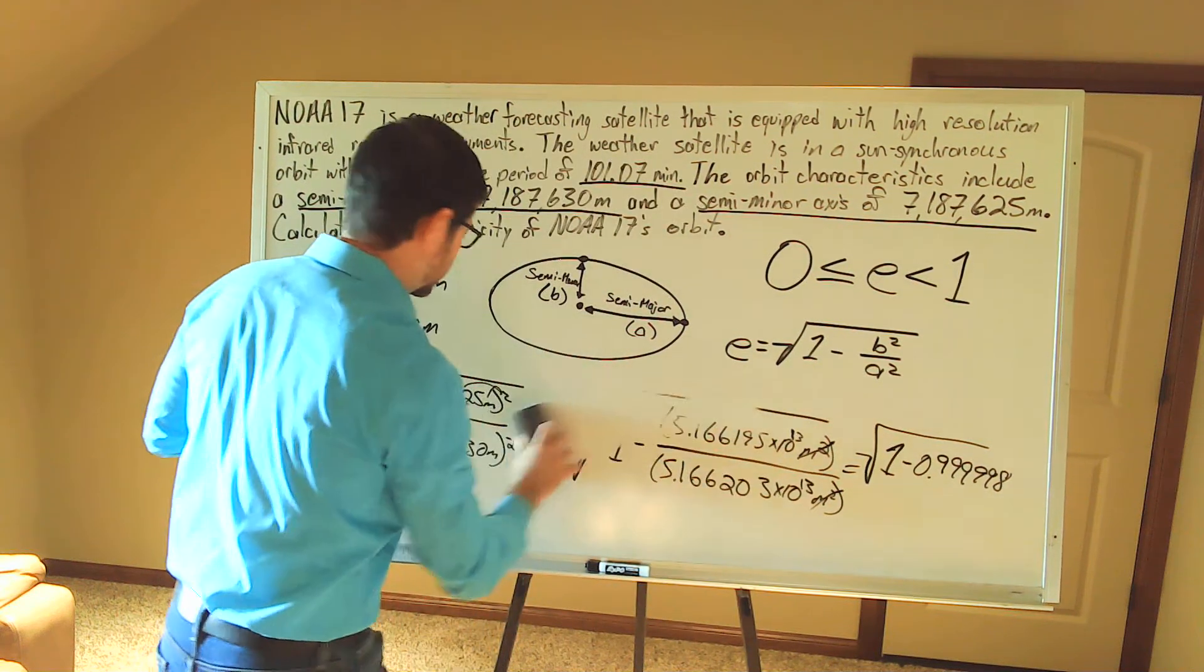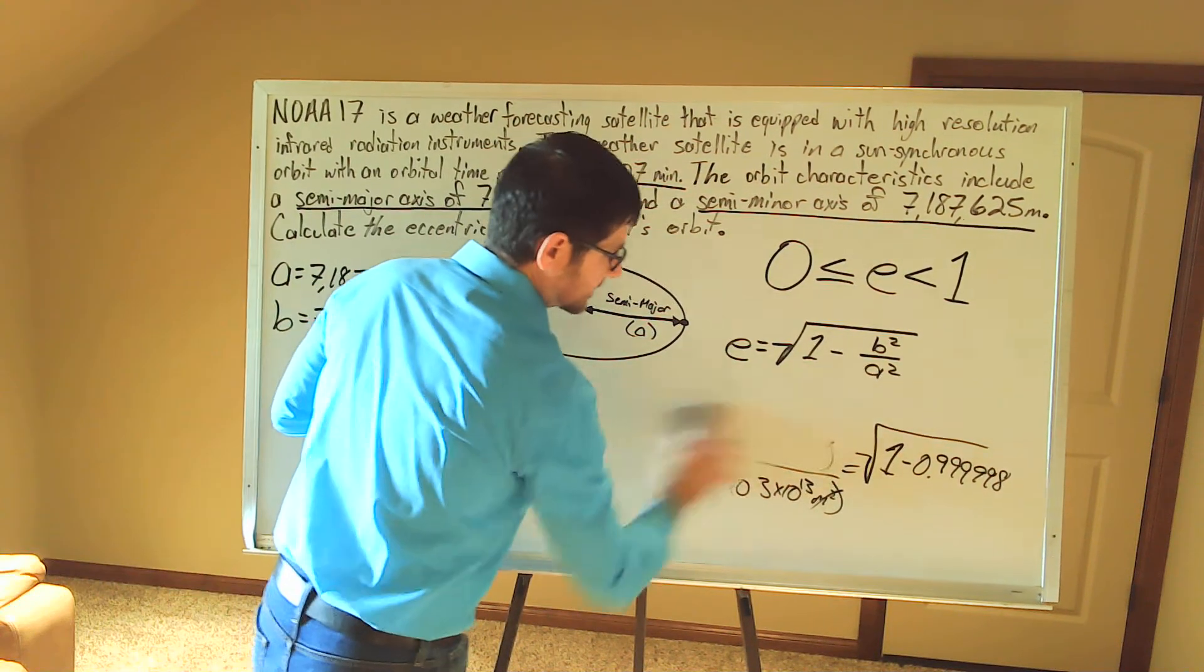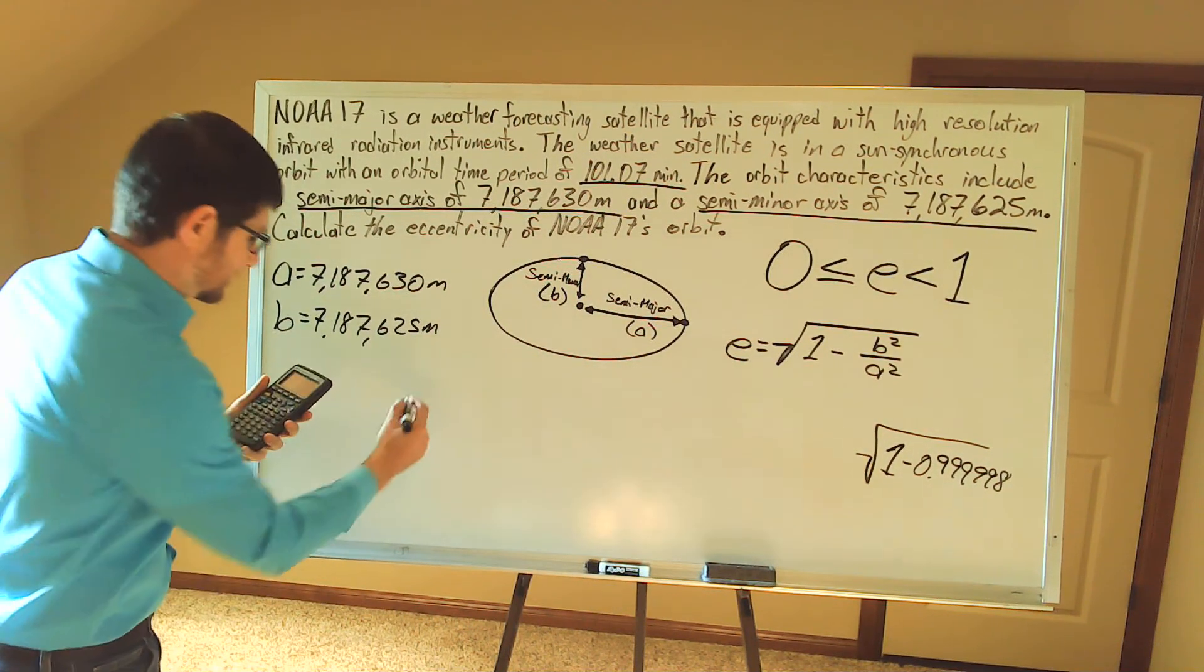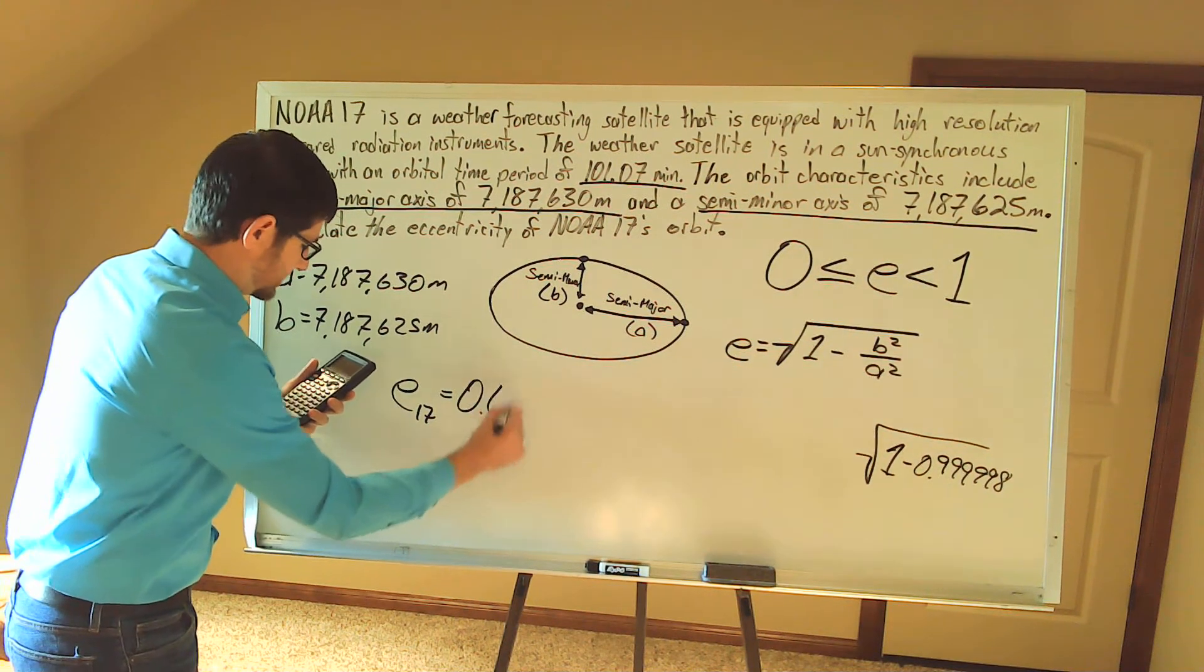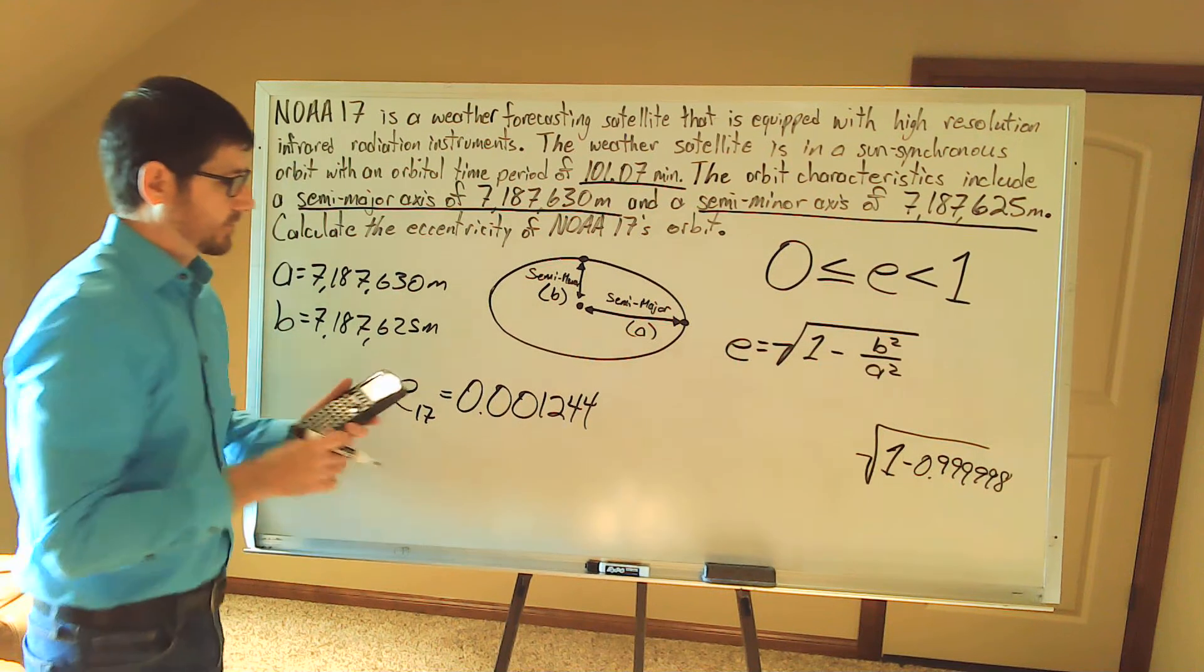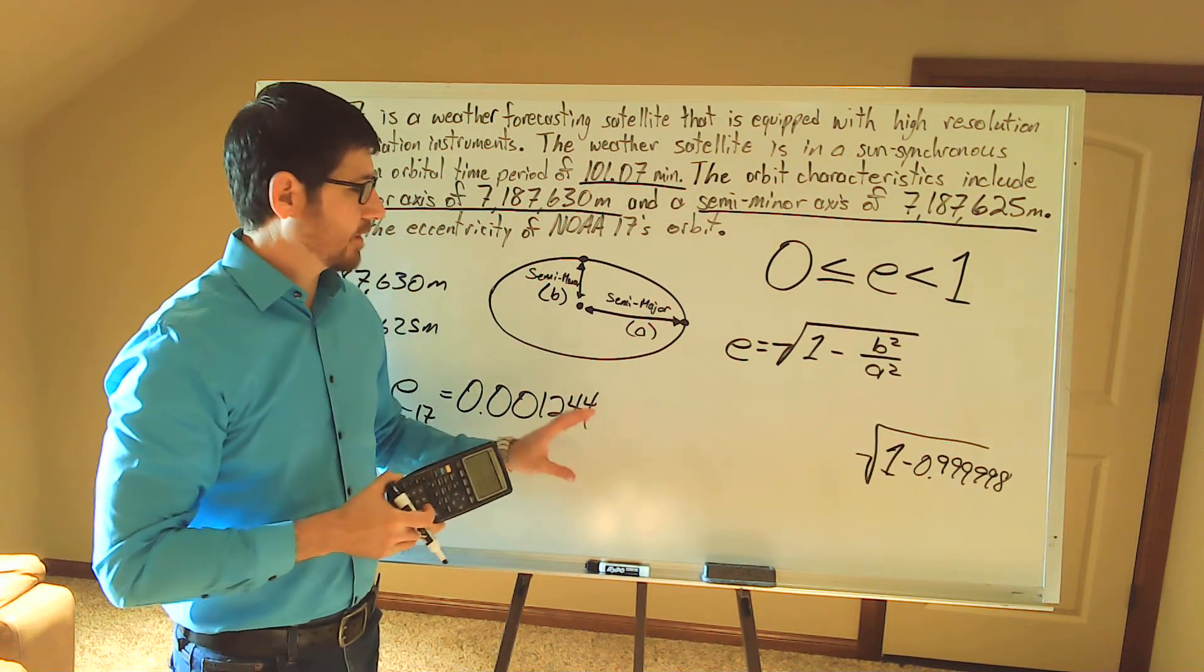And so the eccentricity of the orbit for NOAA 17 is equal to 0.001244. So we have a very round orbit.